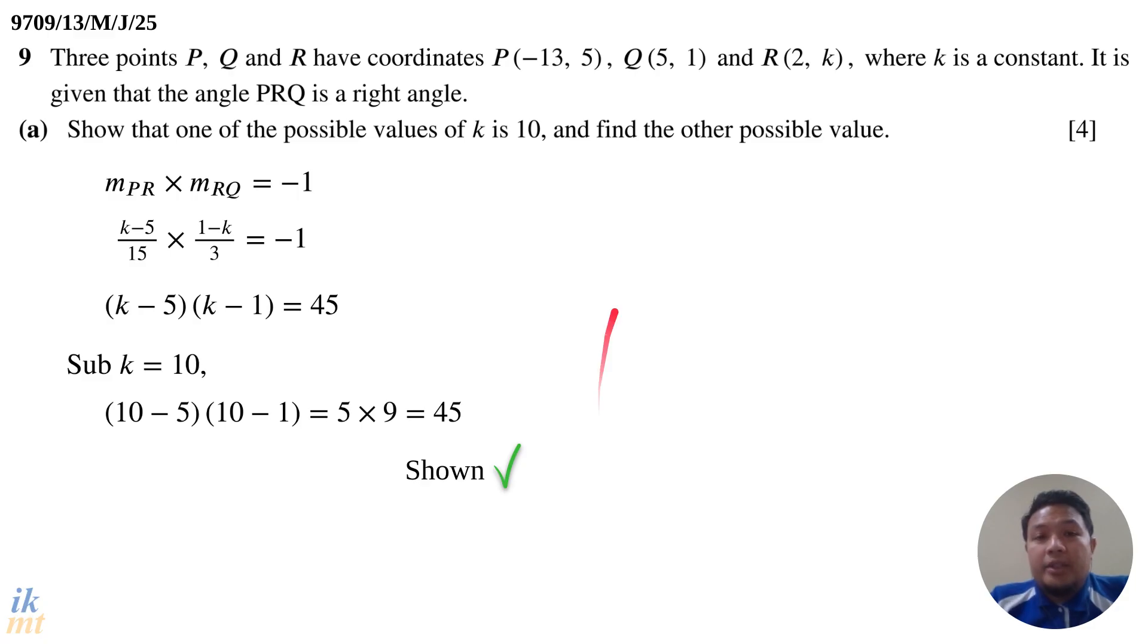Now what we have to do is to do the second task, which is to find the other possible value, which means we should expand this and make it into a quadratic equation. If you do that properly, expand (k - 5)(k - 1), you should get k² - 6k + 5 and the other side here equals 45. Then you bring the 45 to the other side and get this quadratic equation. After this, you can now solve the quadratic. You can factorize this already. You already know one value of k, which is 10.